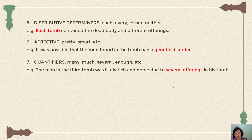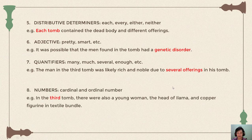The next type is numbers — cardinal and ordinal. Cardinal numbers are like one, two, three, etc., and ordinal numbers are first, second, third, etc. Example: 'In the third tomb there were also a young woman, the head of a llama, and a copper figurine in a textile bundle.' Here 'third' is an ordinal number.